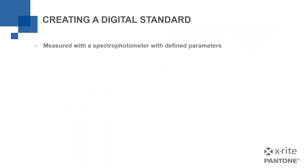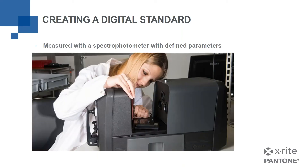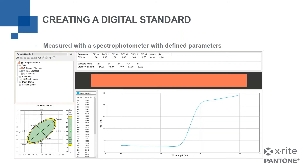So how do I create a digital standard? As we said in our previous webinar, you measure with a spectrophotometer with defined parameters — maybe measuring reflectance data with a benchtop spectrophotometer, or measuring transmission where you measure the light passing through the sample rather than reflecting from it. Ultimately, in the software you've created a standard — for example, an orange standard with LAB and LCH values calculated from the reflectance data, a visible reflectance curve, a color visualization, and an LAB plot.